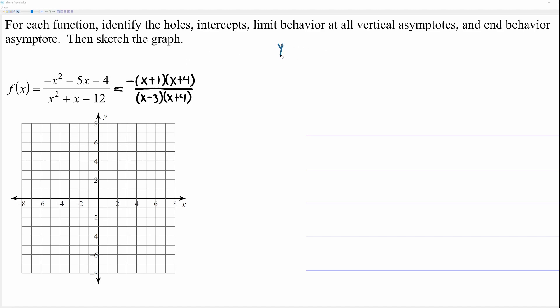Let's find the y-intercept by evaluating the function at zero. I would look at unfactored form to do this, because all the x's become zero. You have negative four over negative twelve, which is positive one-third. So our y-intercept is right here, really close to the origin.